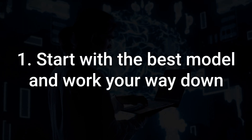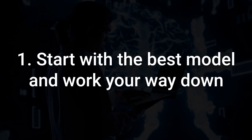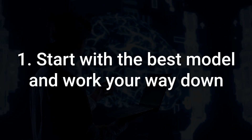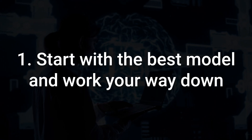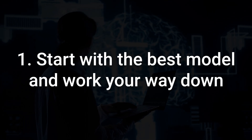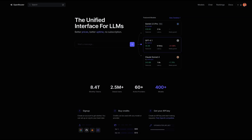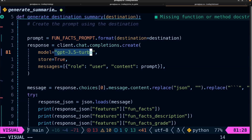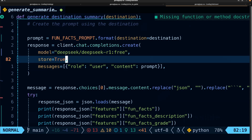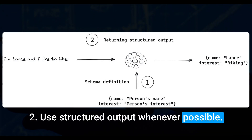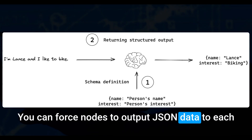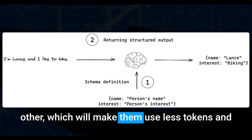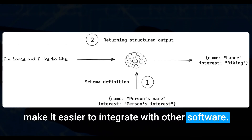Here are some best practices and tips from personal experience. Start with the best model you can find, make something that works, then keep downgrading to a cheaper model until results aren't good enough — this way you optimize cost, speed, and performance. You can use OpenRouter to easily switch between multiple LLMs by just changing an argument in your code. Use structured output whenever possible; you can force nodes to output JSON data to each other, which uses fewer tokens and makes integration easier.